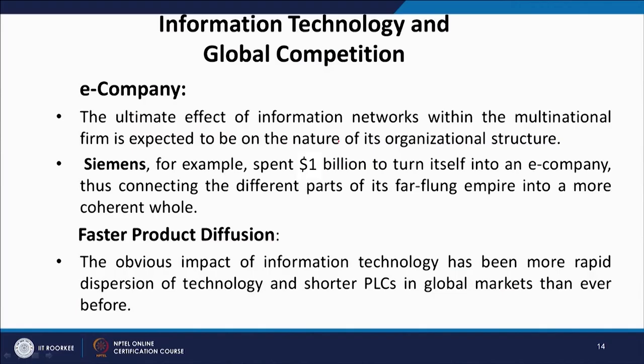The ultimate effect of information networks within the multinational firm is expected to be on the nature of its organization structure. Siemens, for example, spent $1 billion to turn itself into an e-company, connecting the different parts of its far-flung empire into a more coherent whole. Yet another effect is faster product diffusion — the most obvious impact of information technology has been the more rapid dispersion of technology, leading to shorter product life cycles in global markets than ever before.